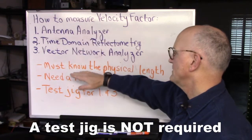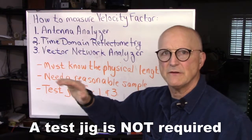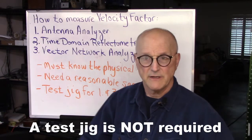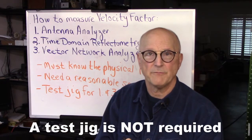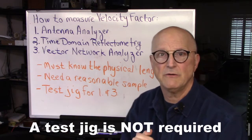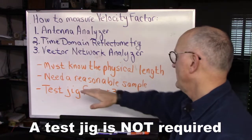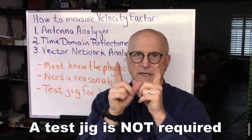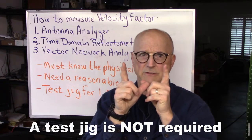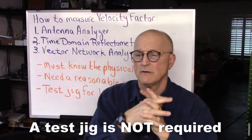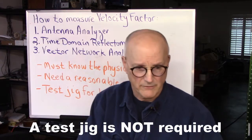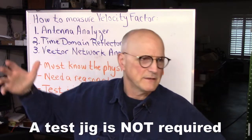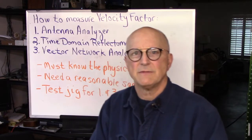But in all three cases, you must know the physical length of your piece of transmission line. So get out your tape measure and measure how long that piece of transmission line is that you're going to be using as a sample. You need a reasonable sample — don't take a piece this short and try to measure the velocity factor, and don't do 800 feet on a roll. Something like 4 feet, 8 feet, or 12 feet — a reasonable length.